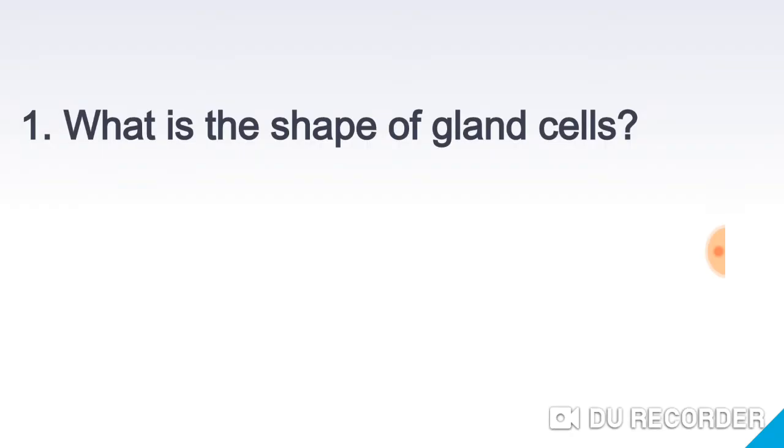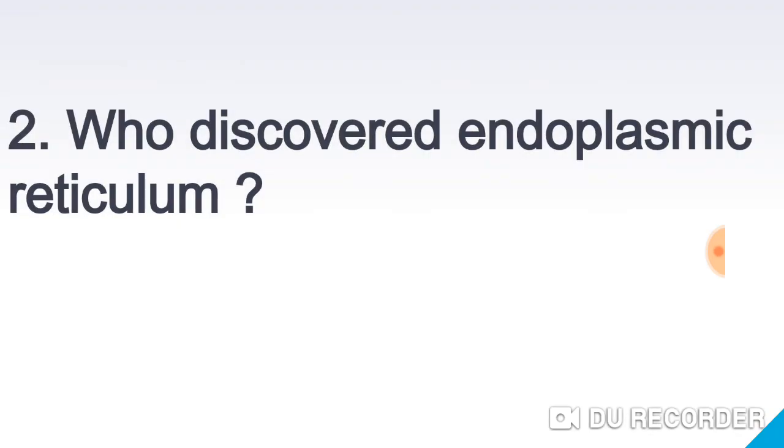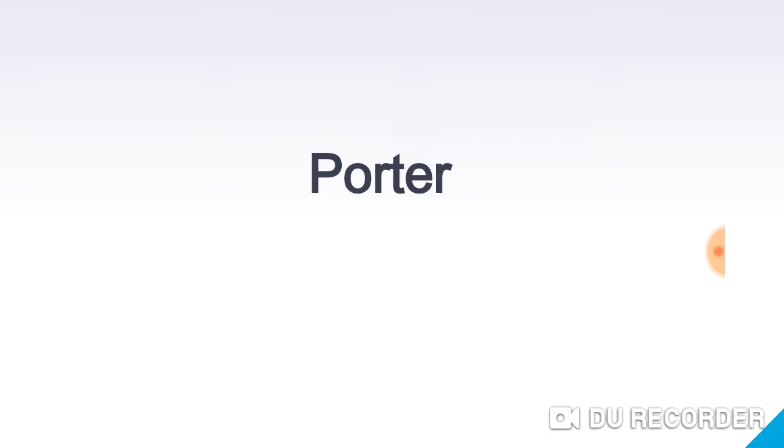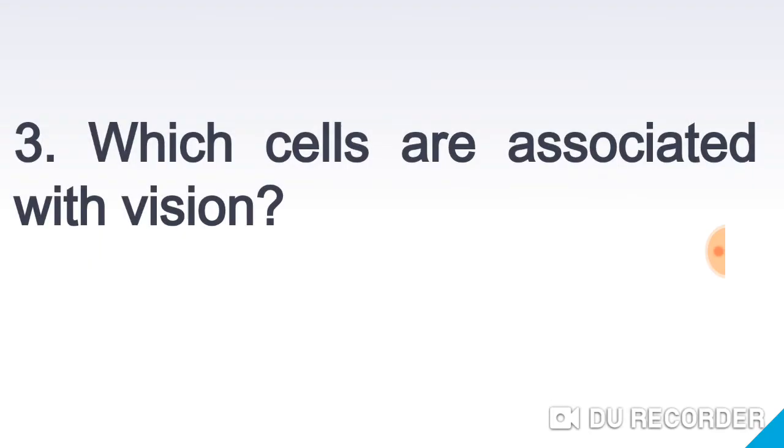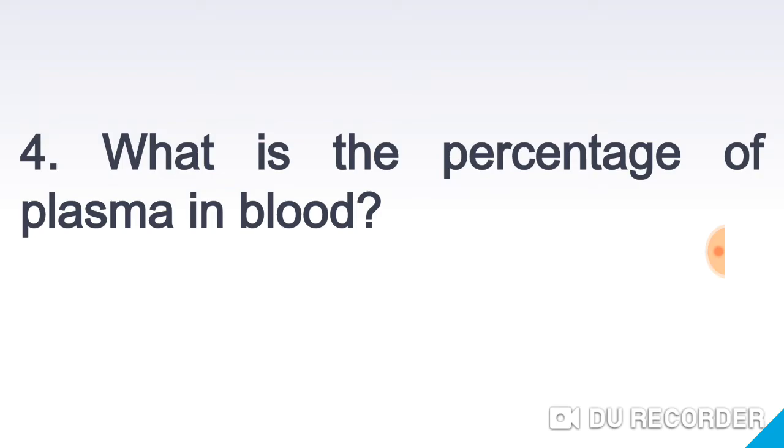What is the shape of gland cells? Cuboidal. Who discovered endoplasmic reticulum? Potter. Which cells are associated with fission? Root cells. What is the percentage of plasma in blood? 55 percent.